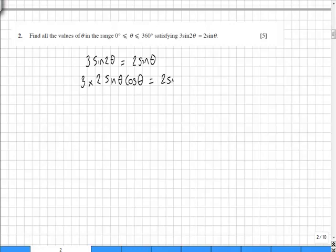Equal to 2 sine theta. So what we get here is 6 sine theta cos theta minus 2 sine theta is equal to 0.